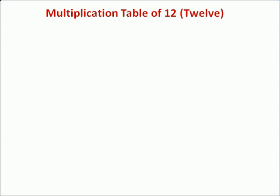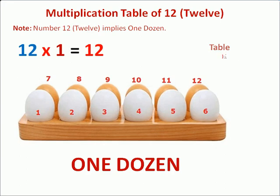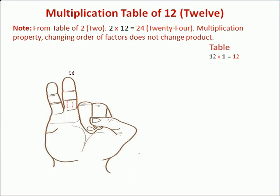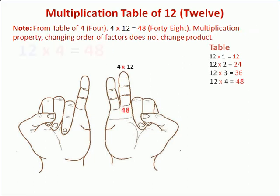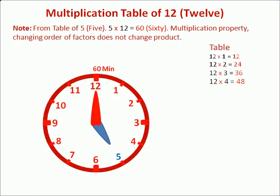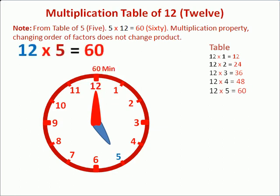Multiplication Table of Twelve. Twelve ones are twelve. Twelve twos are twenty-four. Twelve threes are thirty-six. Twelve fours are forty-eight. Twelve fives are sixty.